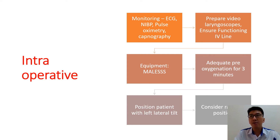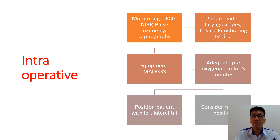Most importantly, the patient must have a functioning IV line, large bore of around 18 or 16 gauge, for us to resuscitate the patient. Intraoperatively, you must have at least monitoring such as the electrocardiograph to record the heart rate, the NIBP for blood pressure monitoring, pulse oximetry, and capnography for the patient.